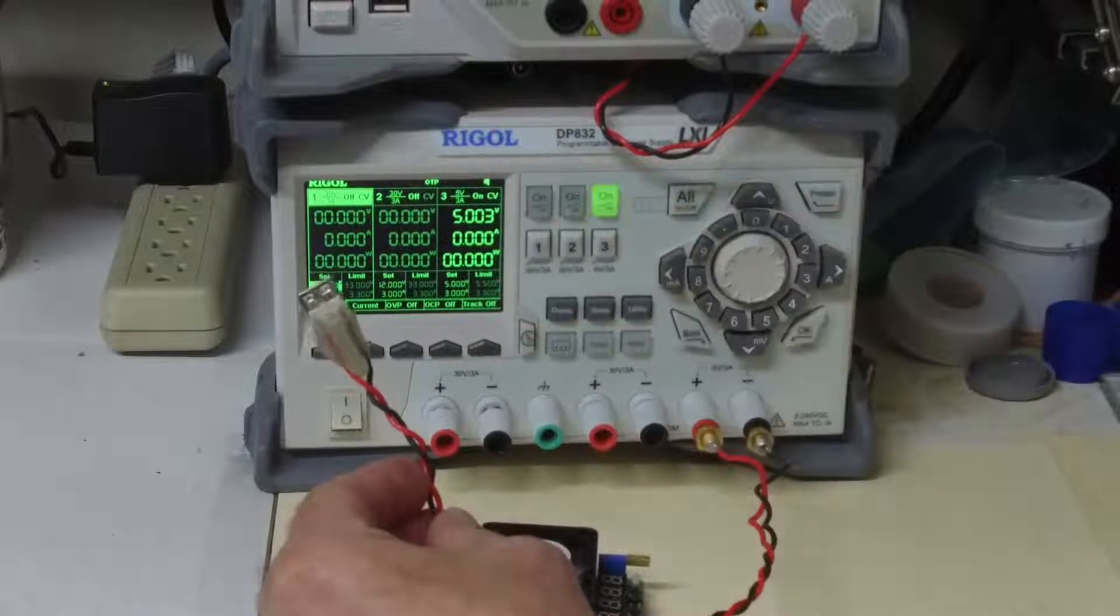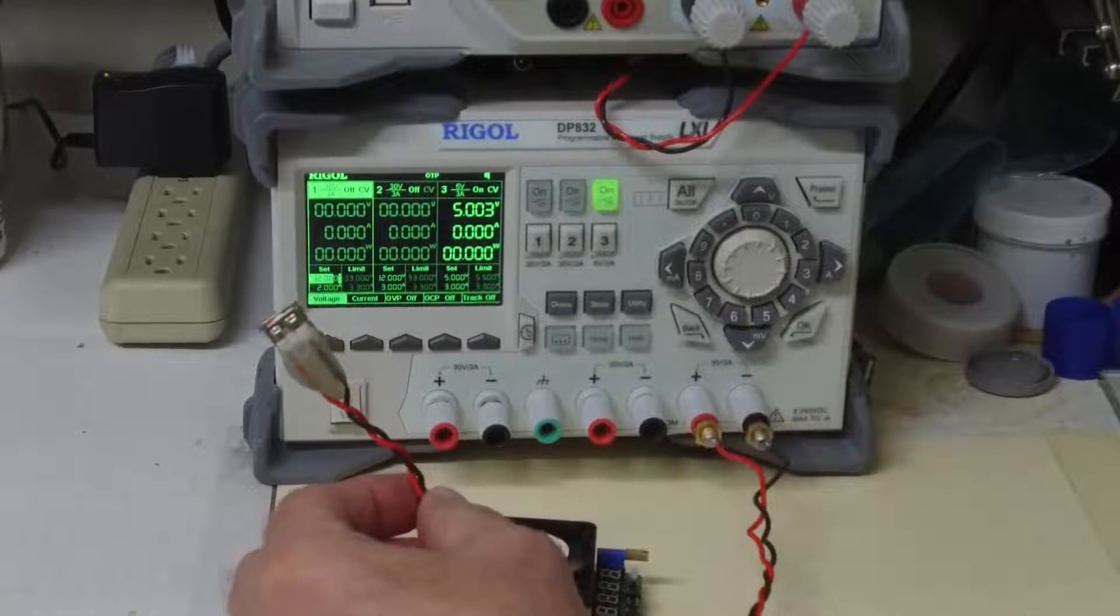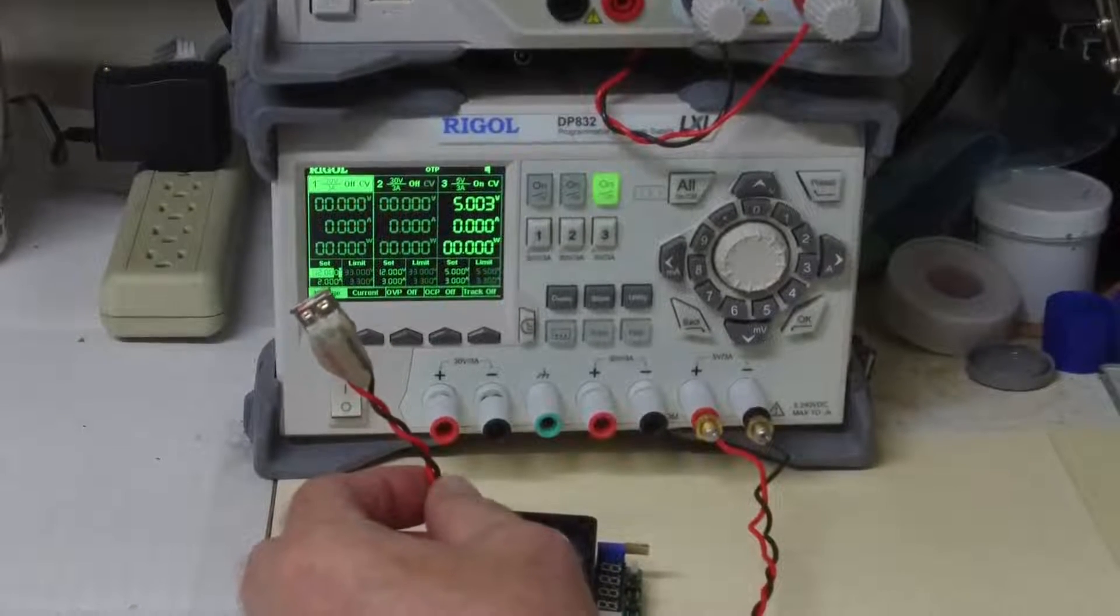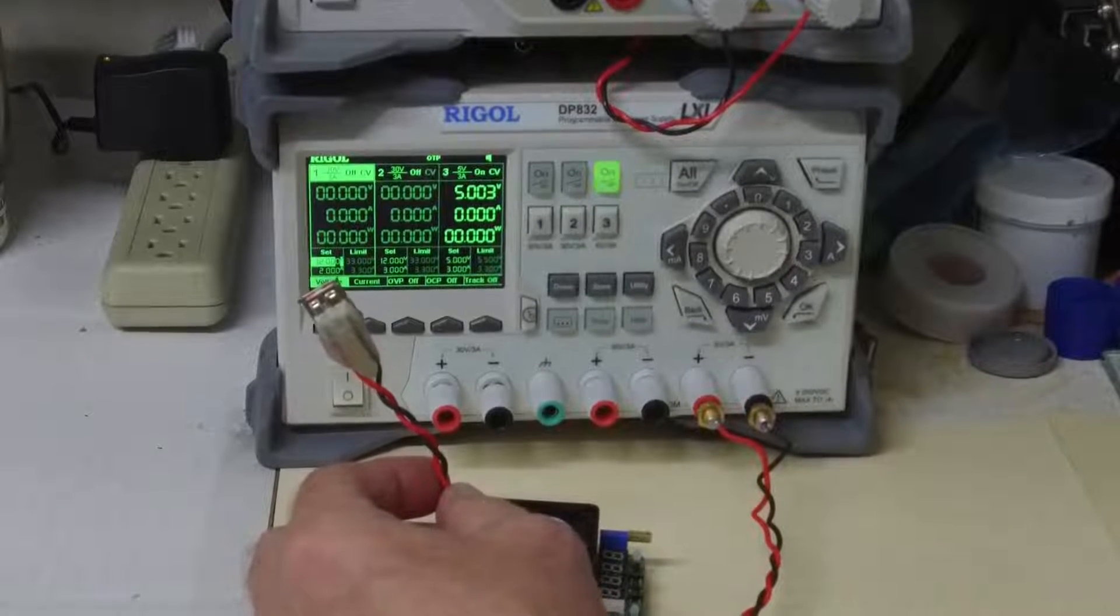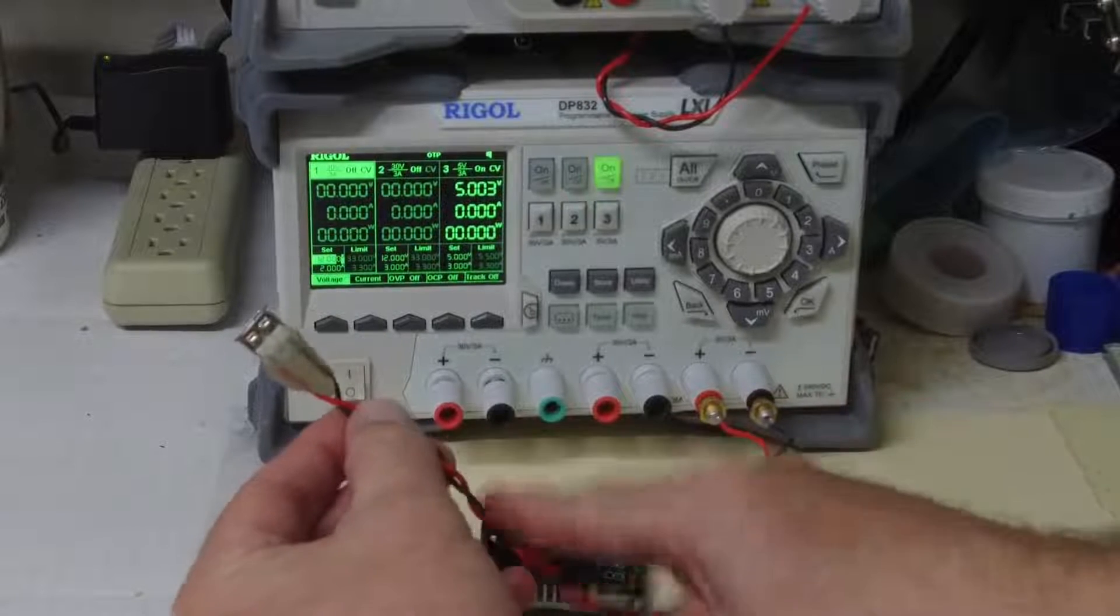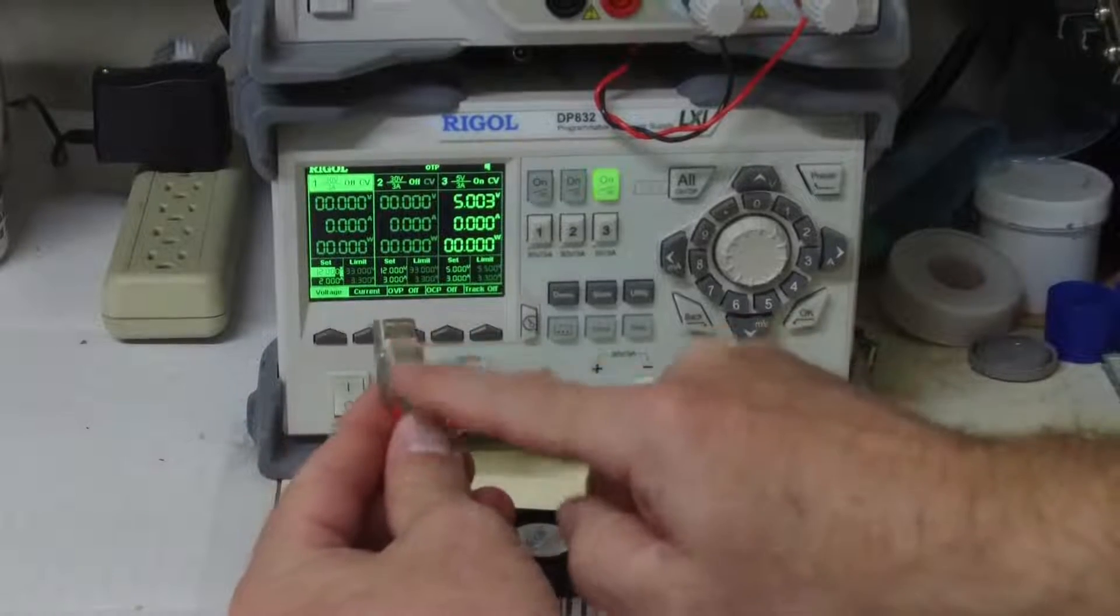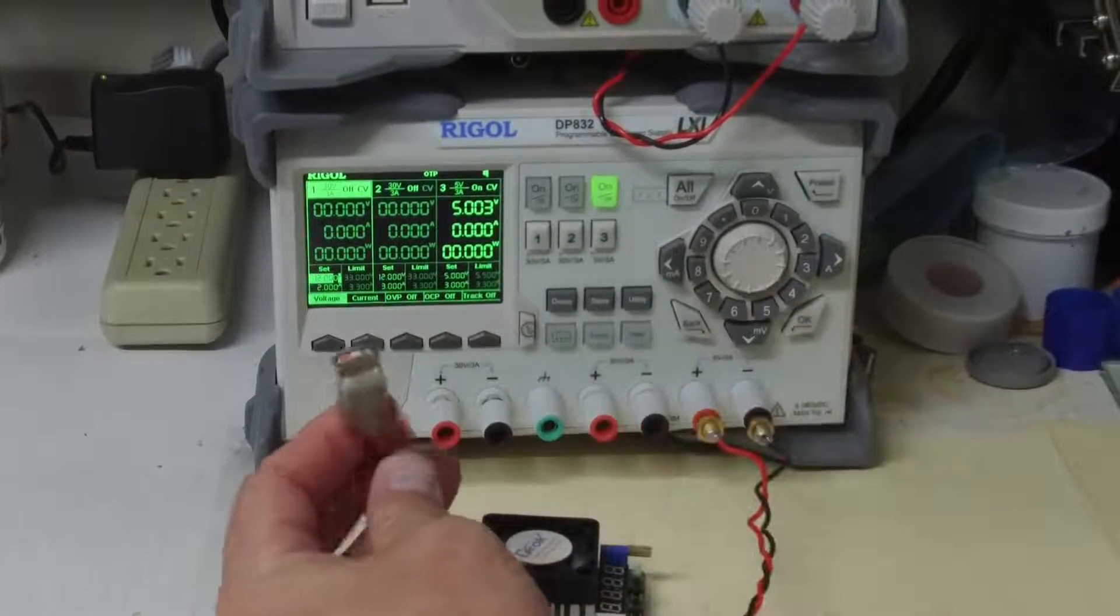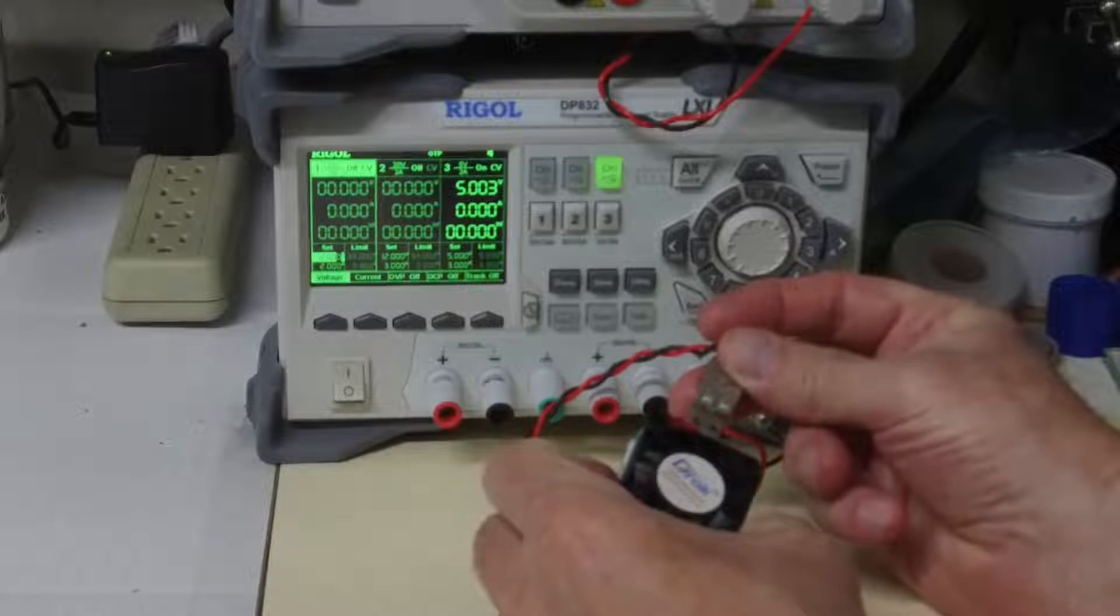I will be using my Rigol DP832 power supply for these tests. As you can see, I'm connected to the 5 volt output right now. The maximum output current of this supply is 3 amps. And I have this cable here, which is a pretty heavy gauge silver Teflon wire with good connections up to this USB-A connector. Let's plug this in and go over the operation.